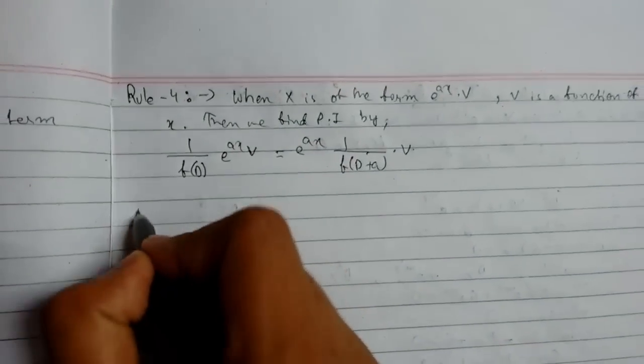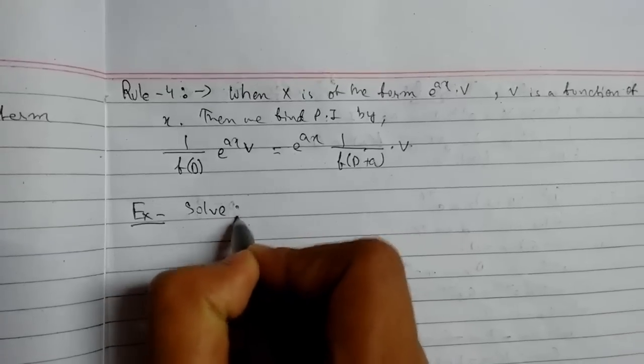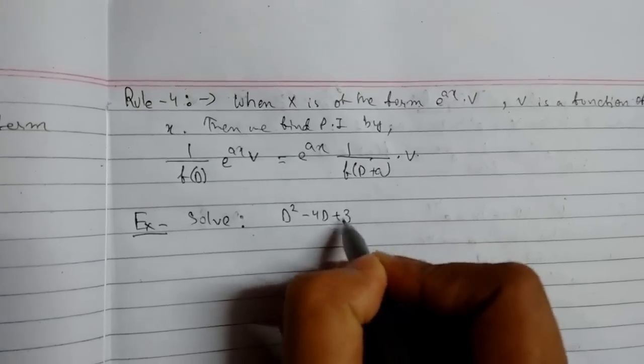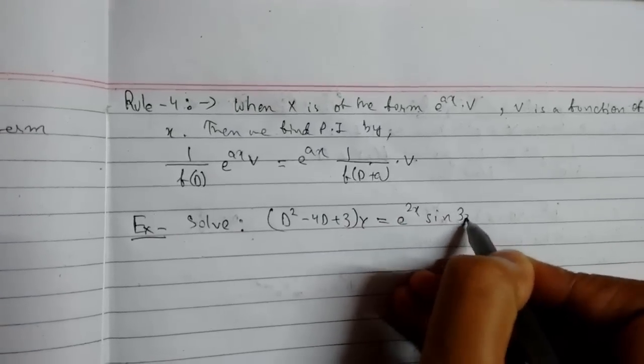So to understand this, let us see an example. Solve: (D² - 4D + 3)y = e^(2x) sin(3x). So this is our question.